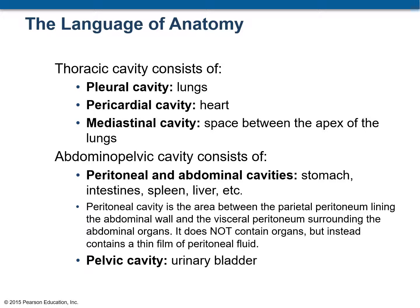Starting with the thoracic cavity, it is further subdivided into smaller sub-cavities. The thoracic cavity contains a pleural cavity which houses the lungs, a pericardial cavity that houses the heart, and the mediastinal cavity which is the space between the two lungs. Moving on to the abdominopelvic cavity: the pelvic cavity houses the urinary bladder and the reproductive organs, while the peritoneal and abdominal cavities contain the stomach, intestine, spleen, liver, and other organs.